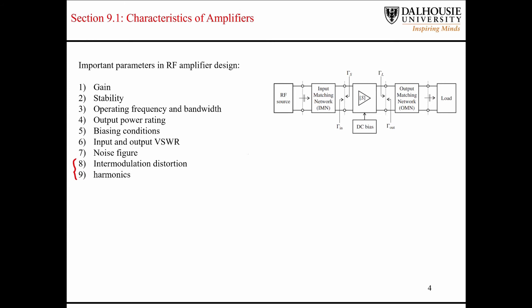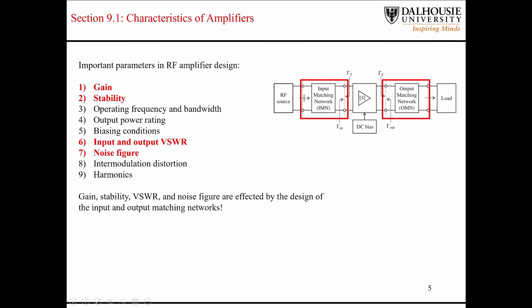But the last two things are the intermodulation distortion and the harmonics. That's related to the nonlinearities of the amplifier or of the transistors that comprise the amplifier. So we'll take a look at that later, too. So these four parameters here, gain, stability, the VSWR, and the noise figure, they're all affected by the design of the matching networks.